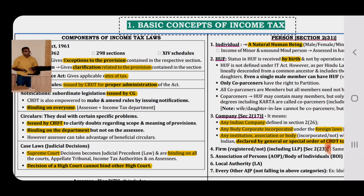Components of Income Tax Law: there are total 5 components. Number 1 — Income Tax Act 1961, which came into existence from 1st April 1962. It contains total 298 sections and 14 schedules. Proviso gives exceptions to the provision and Explanation gives clarification related to the provisions.